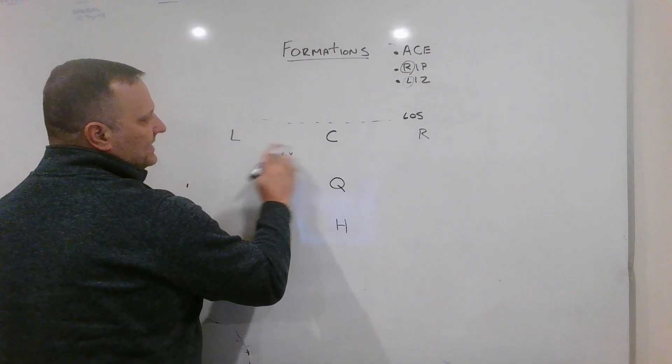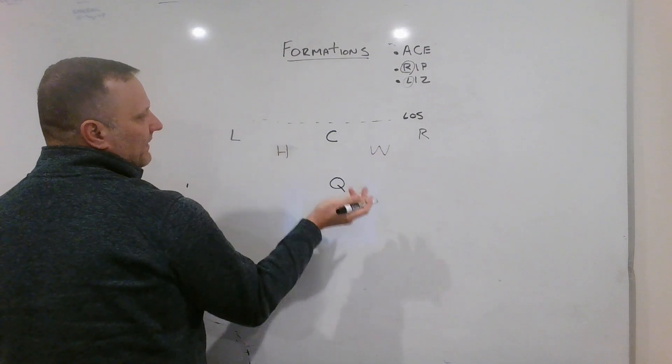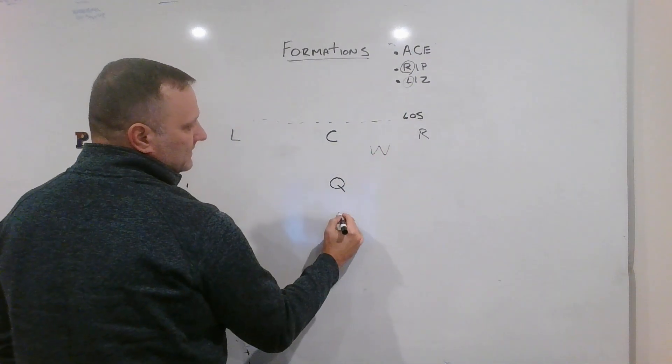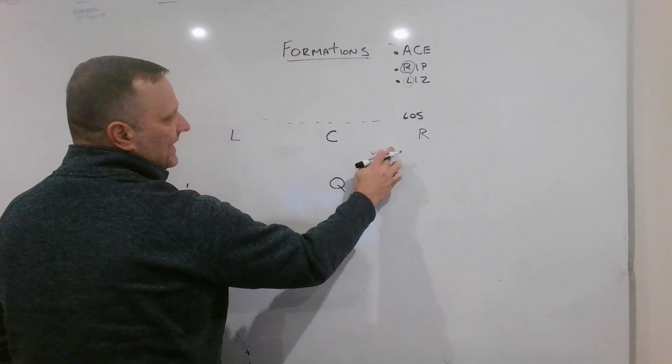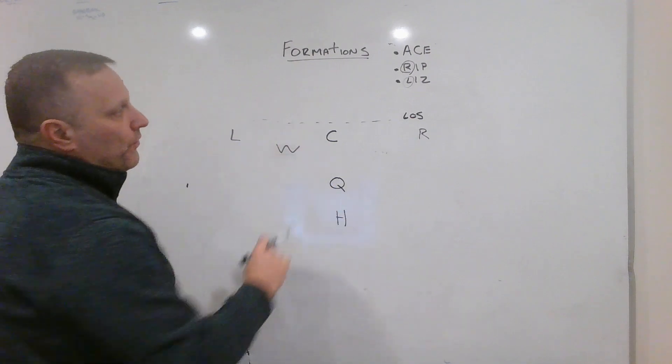So if I say ACE, halfback is up here. If I say RIP, wing is to the right, H. If I say LIZ, wing is to the left. That's it. One more formation.